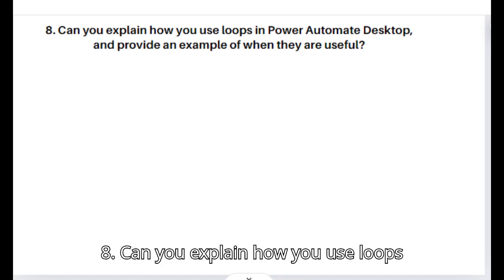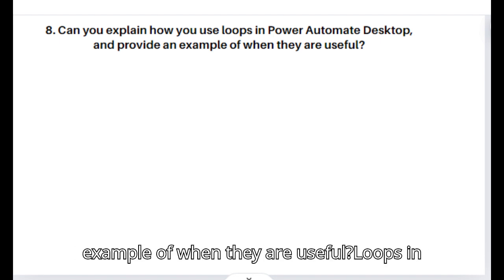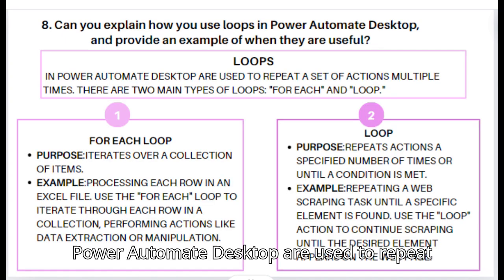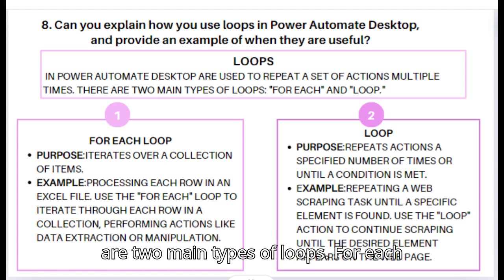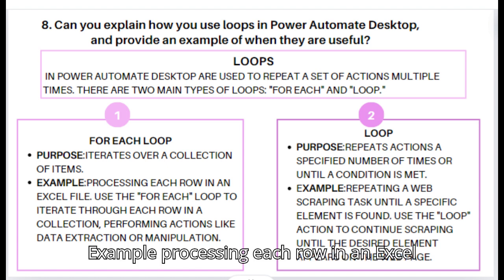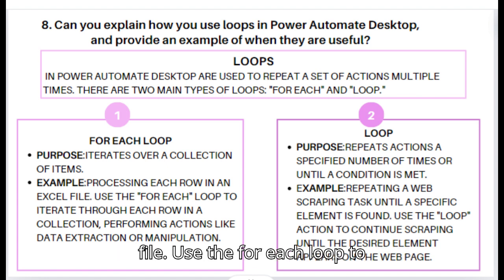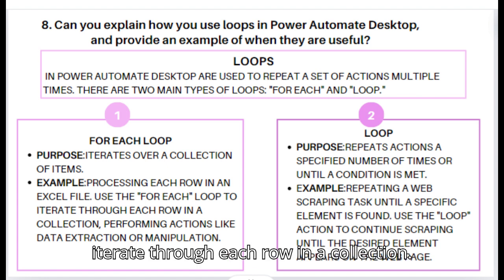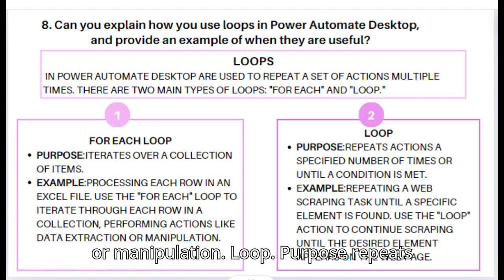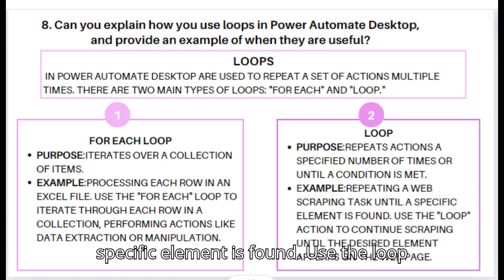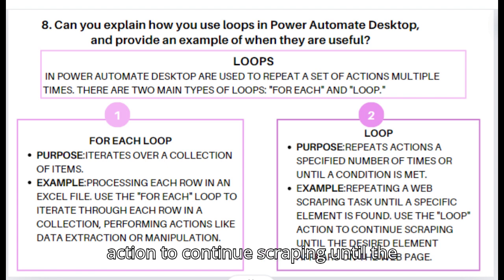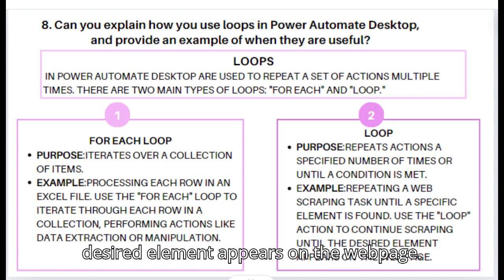Question 8: Can you explain how you use loops in Power Automate Desktop and provide an example of when they are useful? Loops are used to repeat a set of actions multiple times. There are two main types: the for each loop, which iterates over a collection of items (example: processing each row in an Excel file by iterating through each row and performing actions like data extraction or manipulation), and the loop, which repeats actions a specified number of times or until a condition is met (example: repeating a web scraping task until a specific element is found).